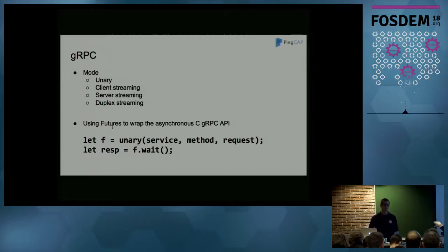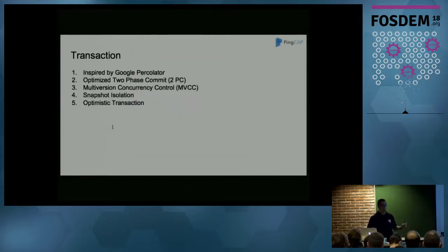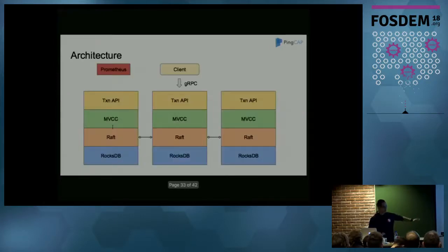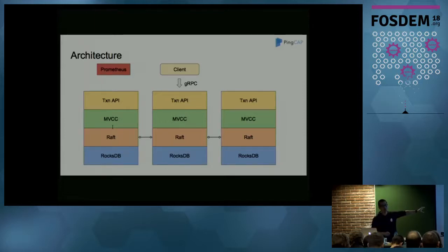Question: do you do predicate pushdown for scaling out? I didn't mention it here because it's not the main topic, but TiKV not only provides the transactional API — it also provides a coprocessor API. The coprocessor is the same concept as in HBase: you can push down some logic to TiKV directly, do some calculation there, and return the result. We already do this.